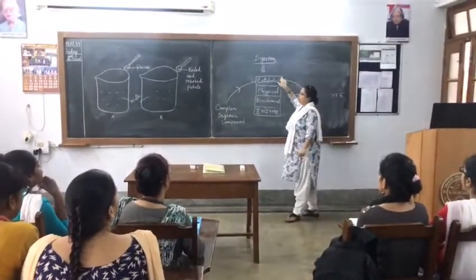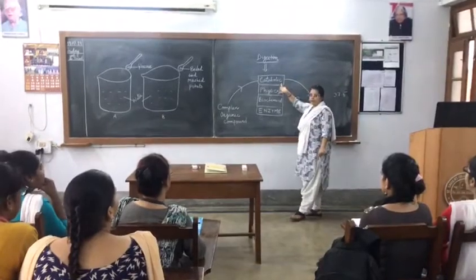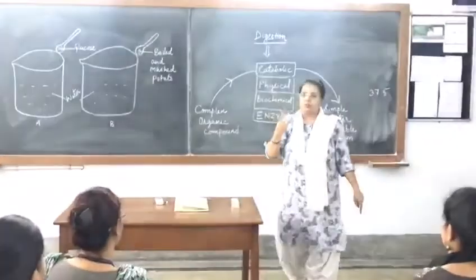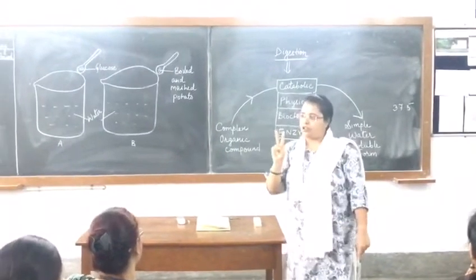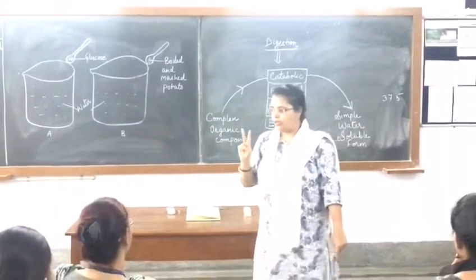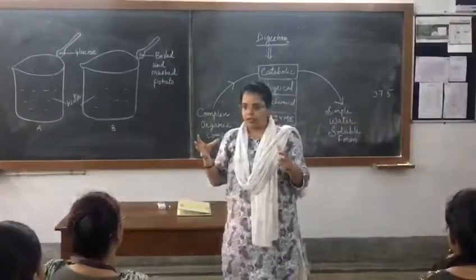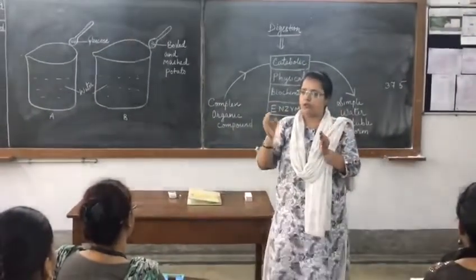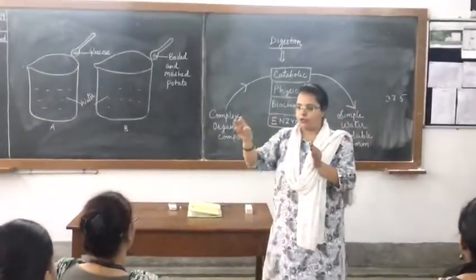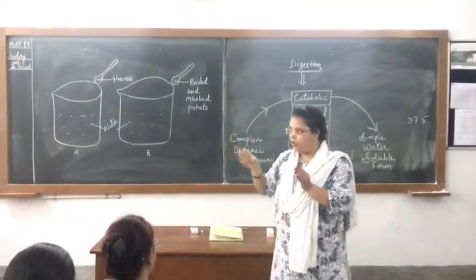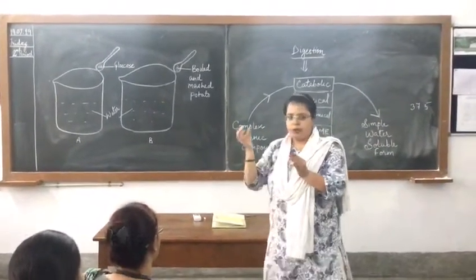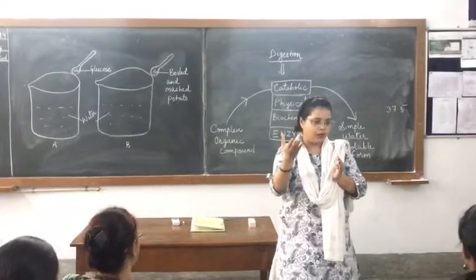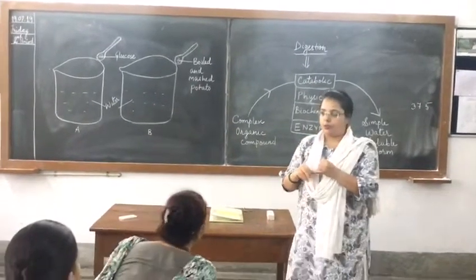So, digestion is which type of process? It is a catabolic process. Biological systems may classify chemical reactions into two categories broadly: catabolic and anabolic. When a large molecule is broken into small molecules, it is a catabolic process. But when small molecules are built into a large molecule, it is an anabolic process.